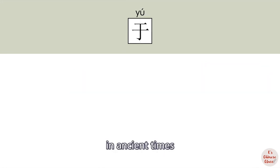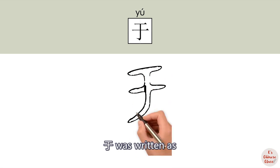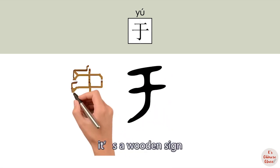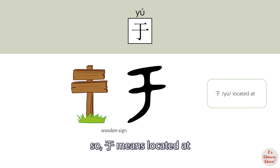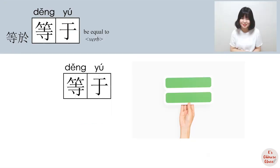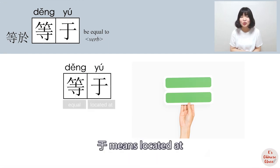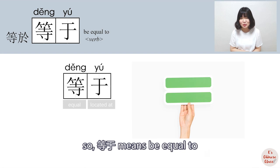In ancient times, 于 was written as a wooden sign, so 于 means 'located at.' Combined, 等于: 等 means 'equal,' 于 means 'located at,' so 等于 means 'be equal to.'